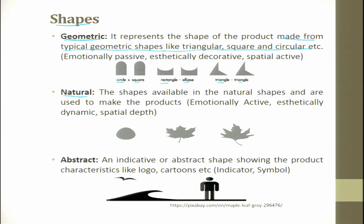The next shape type is natural shape — this is basically the fractal shape, which is emotionally active, enthusiastically dynamic, and spatially active. Abstract shapes indicate product characteristics like logos, cartoons, and symbols — for example, male/female indicators, a rocket, a plane, or a mobile phone with a cross meaning no signal.